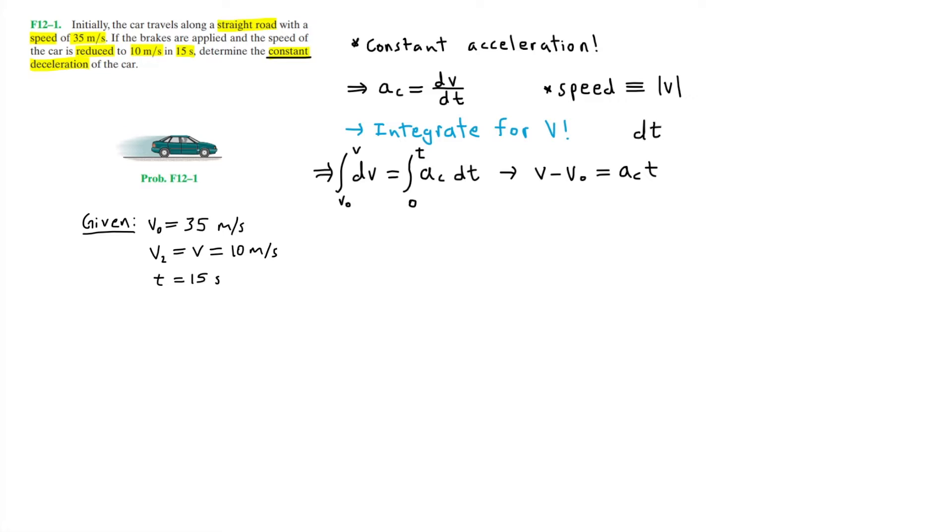Since the integral of DT is simply T, and the integral at 0 is just AC times 0, which is 0. So now, after simplifying this and adding V0 to the right side, we will get V equals A sub C times T plus V0, which I'll call equation 1. And so this is simply velocity as a function of time, strictly at constant acceleration.